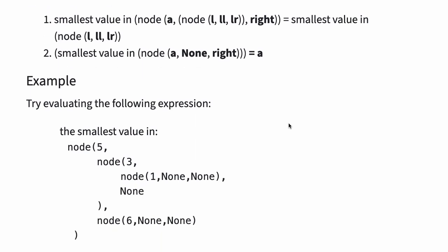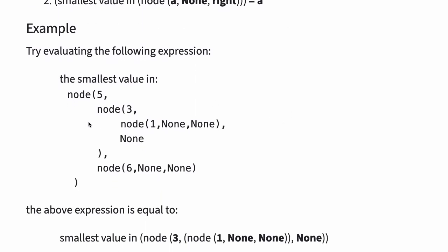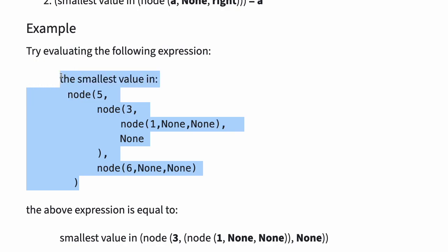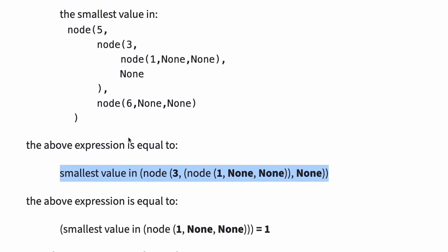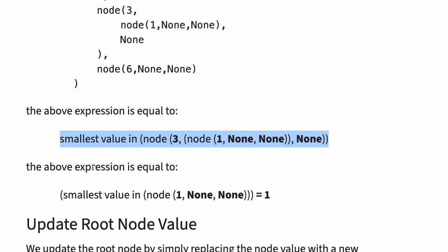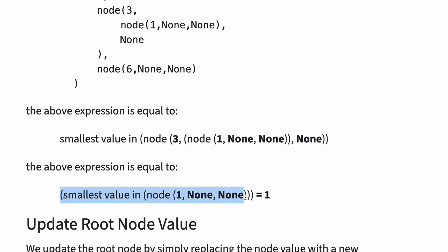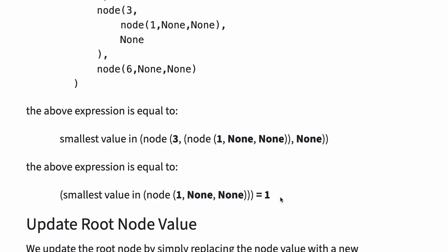For example, let's evaluate the smallest value in the tree with node 5, 3, 1, and 6. This expression equals the smallest value in node 3 and 1, which is the left child. That equals the smallest value in node 1, again the left child. And the smallest value of this one node is simply the node value, which is 1.